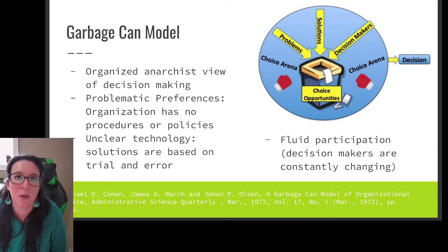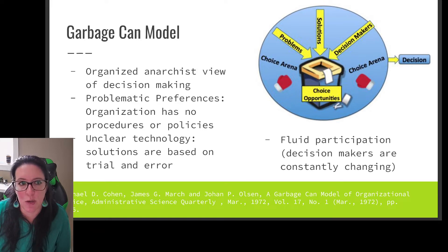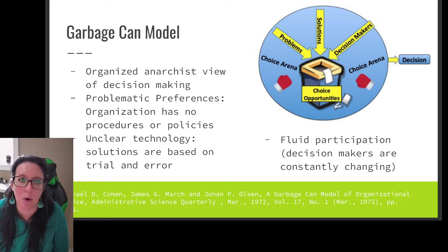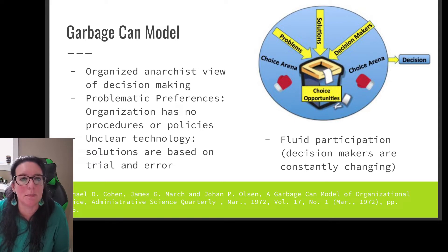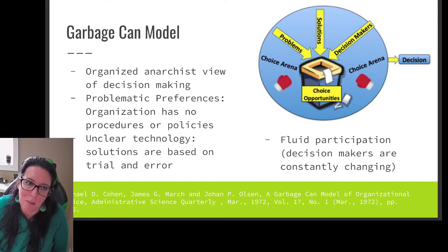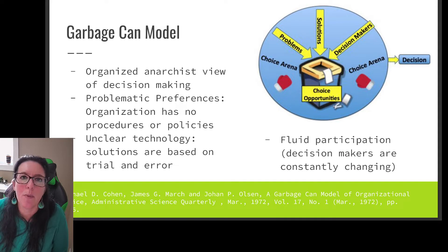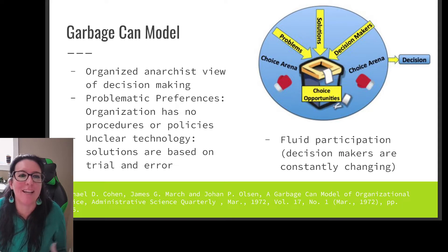In our previous videos we looked at a more traditional approach to decision making, so let's look at an alternative approach. This is called the garbage can model from Cohen, March, and Olson. Where the traditional approach is a step-by-step method for making decisions, the garbage can model is more of an organized anarchist view of decision making.